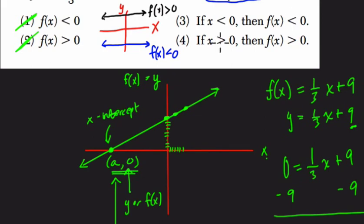In choice 3, it says if x is less than 0, then f(x) is less than 0. That's not true, because we can see that in this region right here, all these x values are less than 0. All these little x values in here. But the height is always above 0 in this region. So this is not true. If x is less than 0, then the height f(x) is less than 0. We can cross that out.